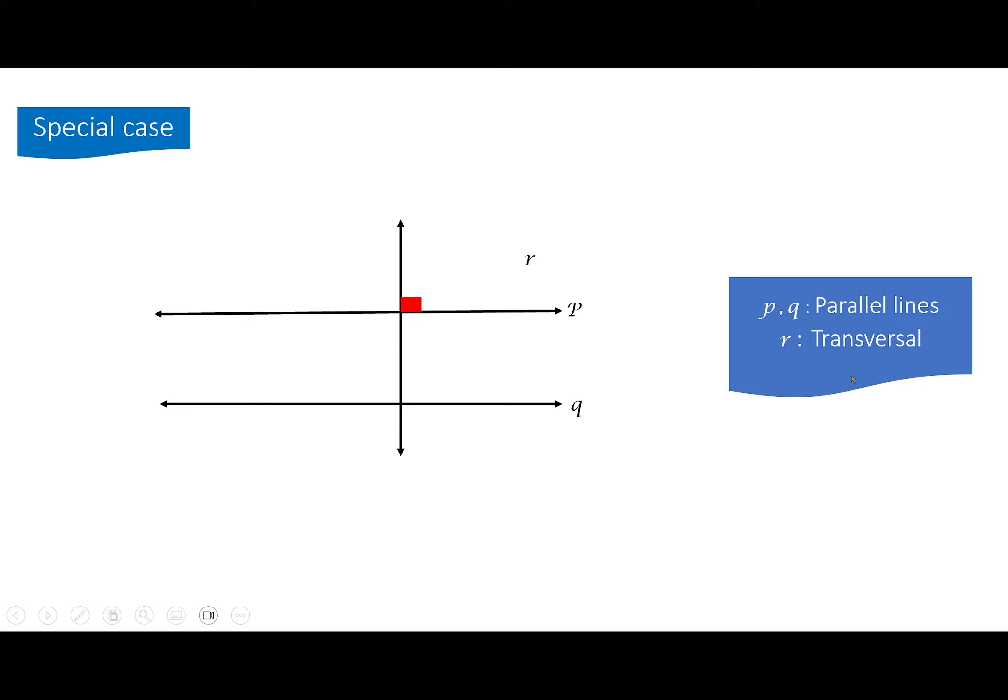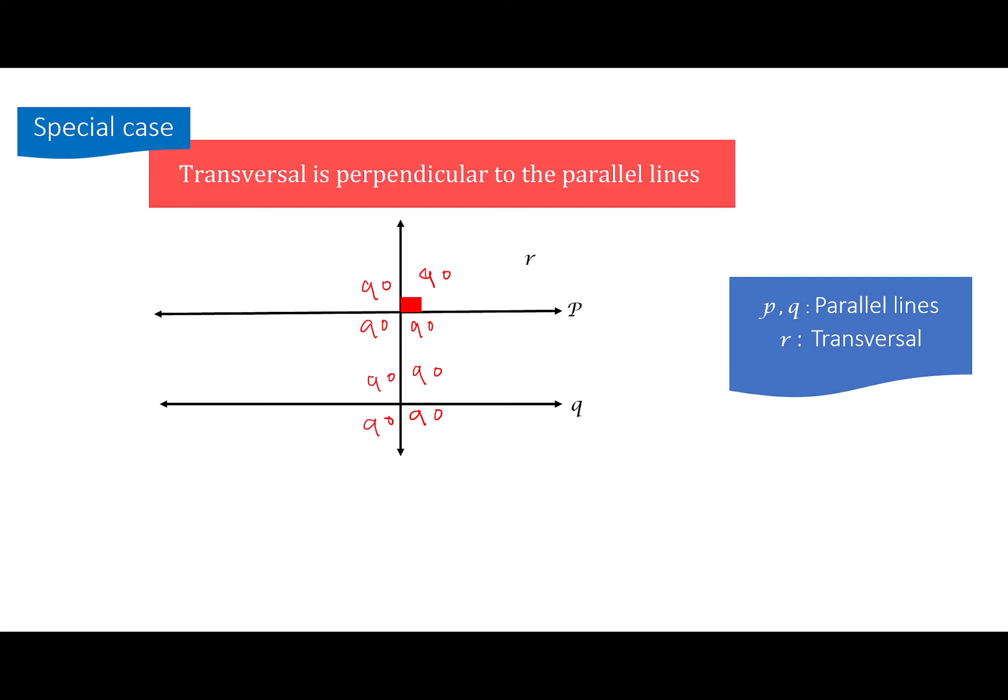Special case. Now, in case the transversal is perpendicular to the lines, all these angles are 90. All of them are 90. That would be an easy case if they give you something like that on the test. Transversal is perpendicular to the parallel lines. All angles are right angles and each one of them measures 90 degrees.